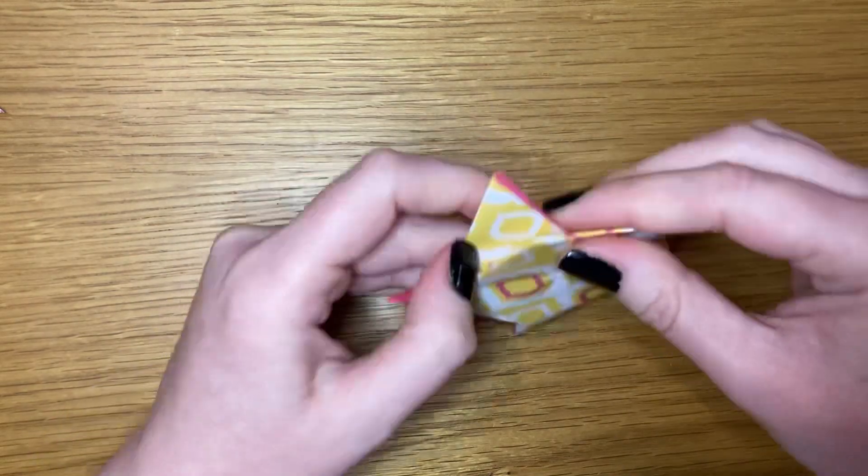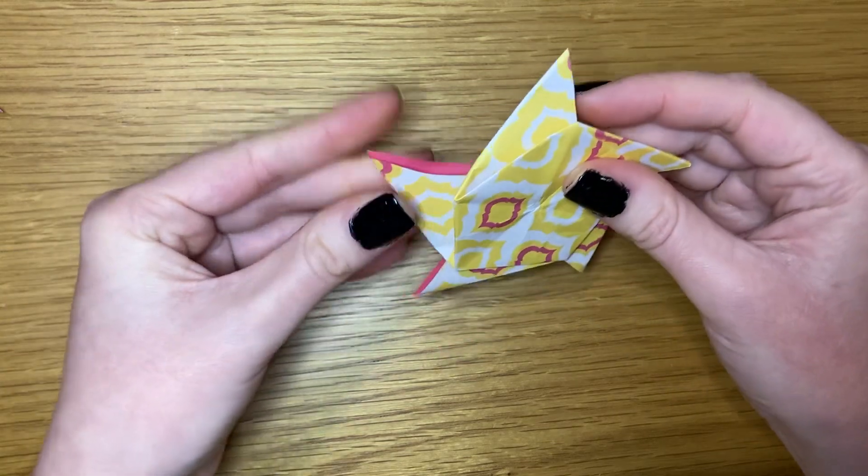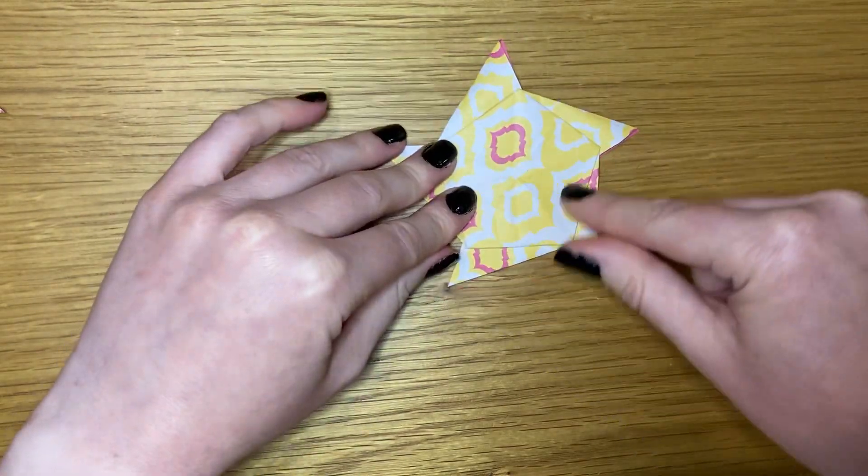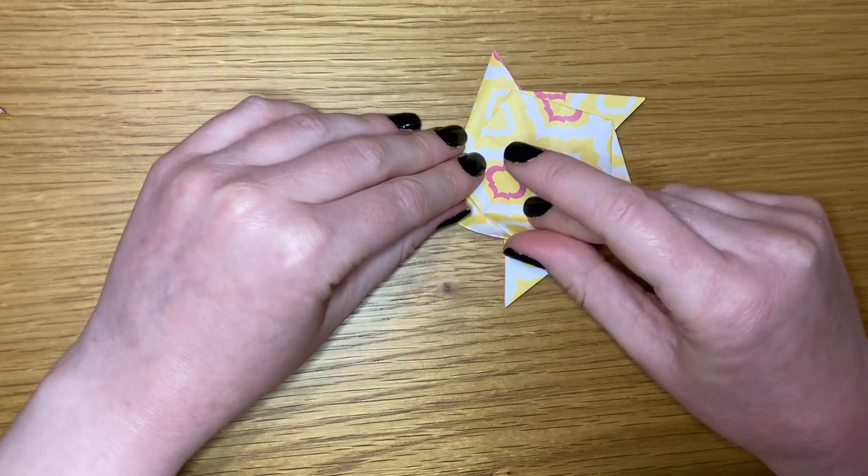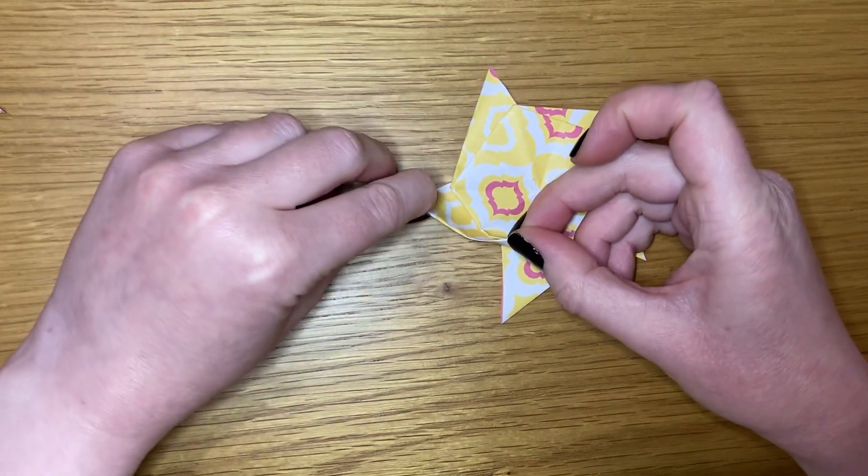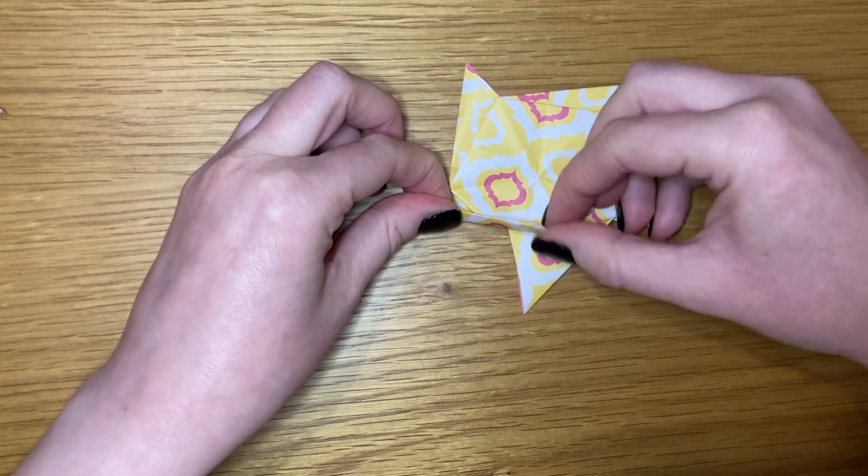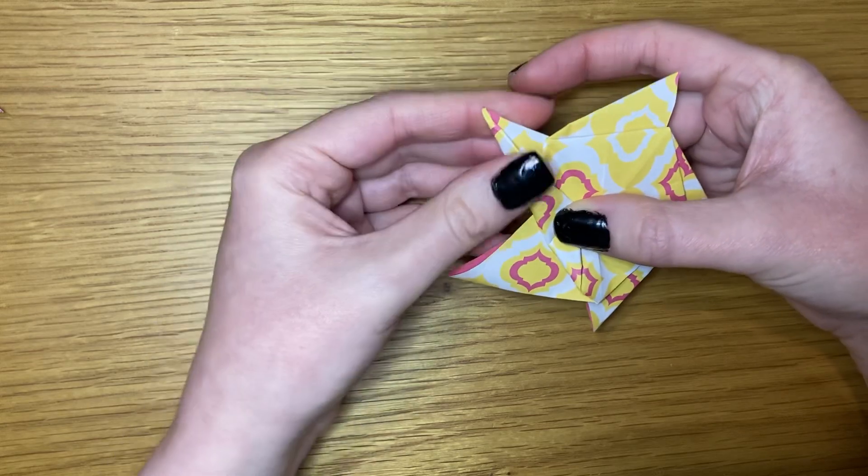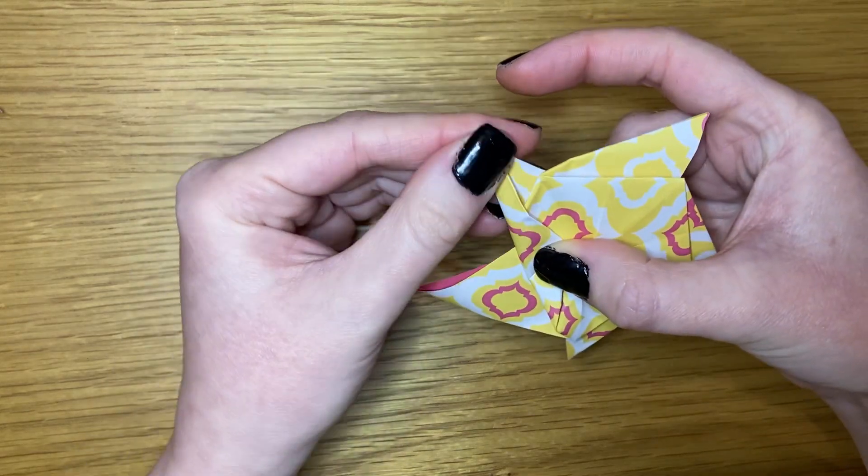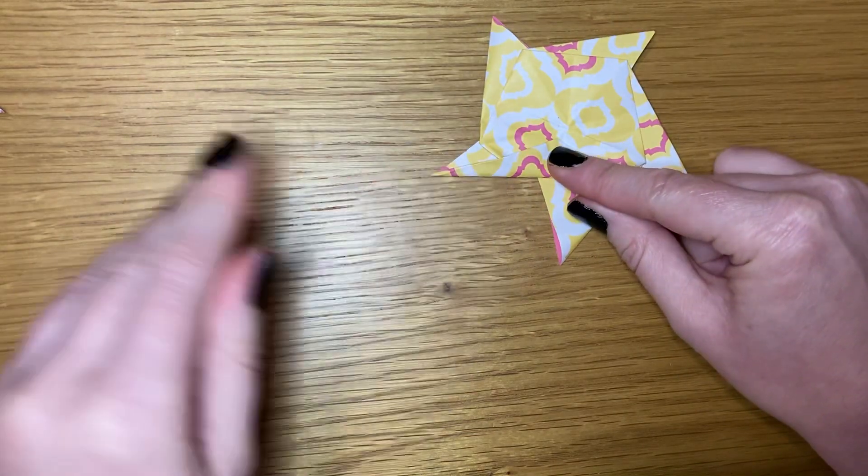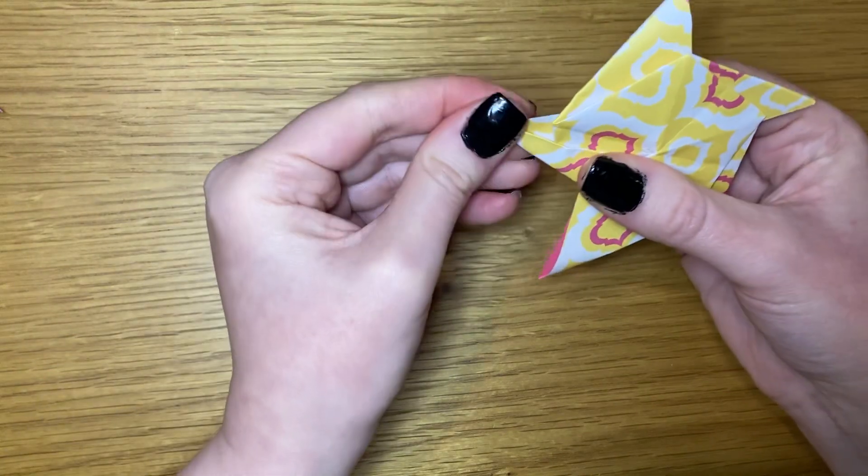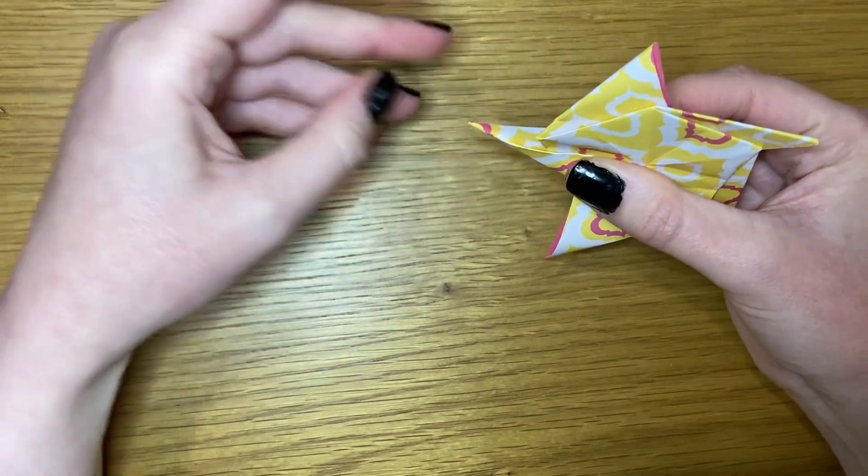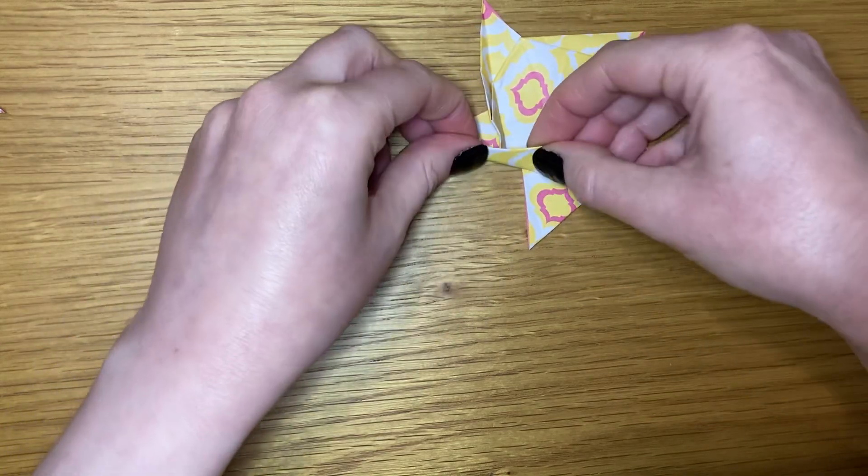Once we've got it nice and flat and all our points straight, turn it over and now you've got a pentagon as well as the points. Take any corner of the pentagon and the point of the star it's attached to and roll it in. So this point comes into the center and we are folding our point in half. Then just make the fold nice and flat. Open it back out and repeat on all five sides.